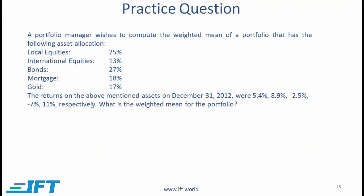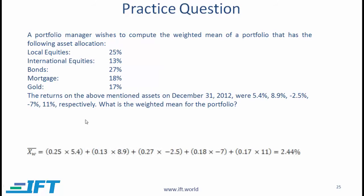Now you need to try and solve the practice problem to make sure you understand how to calculate the weighted mean. The answer should be 2.44%.